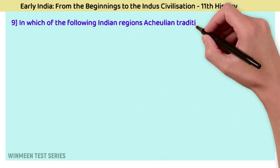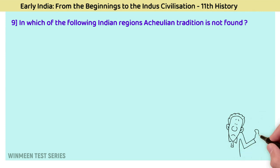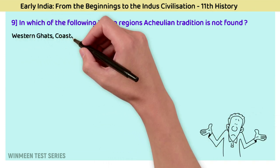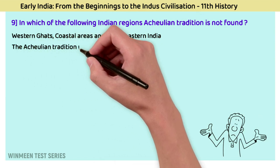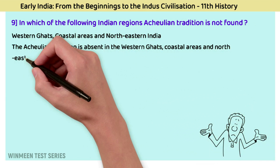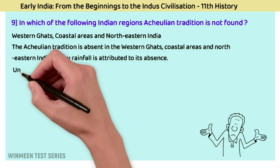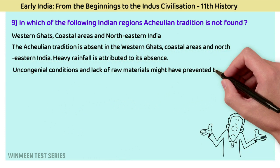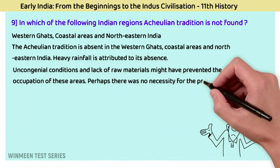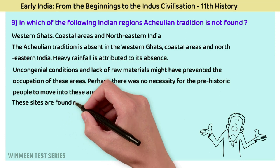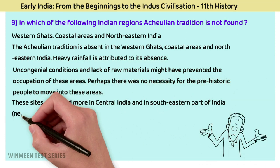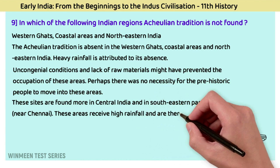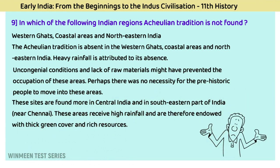Question 9: In which Indian regions is the Acheulian tradition not found? The answer is the Western Ghats coastal areas and North-Eastern India. The Acheulian tradition is absent in the Western Ghats coastal areas and North-Eastern India. Heavy rainfall is the main reason for its absence — unconventional conditions and lack of raw materials may have prevented occupation. These Acheulian sites are found more in central India and southeast India near Chennai.